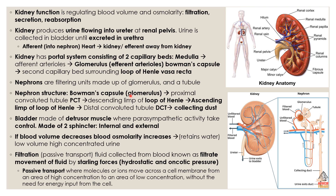The nephron structure goes from the glomerulus — which has the Bowman's capsule underneath it — then to the proximal convoluted tubule (PCT). It then extends into two parts: the descending loop of Henle and the ascending loop of Henle. After that it goes to the distal convoluted tubule (DCT) and then into the collecting duct. So: glomerulus → PCT → descending → ascending → DCT → collecting duct.